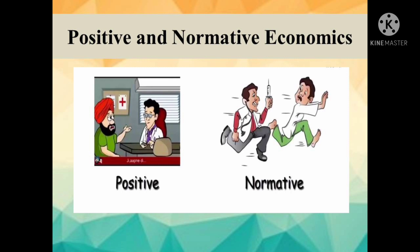Normative Economics deals with what ought to be, or how an economic problem should be solved. Alfred Marshall and Pigou have considered the normative aspect of economics. They maintain that economics is a normative science as it prescribes that course of action which is desirable and necessary to achieve social goals. In other words, in Normative Economics there is no reservation on passing value judgment on the moral rightness or wrongness of things.